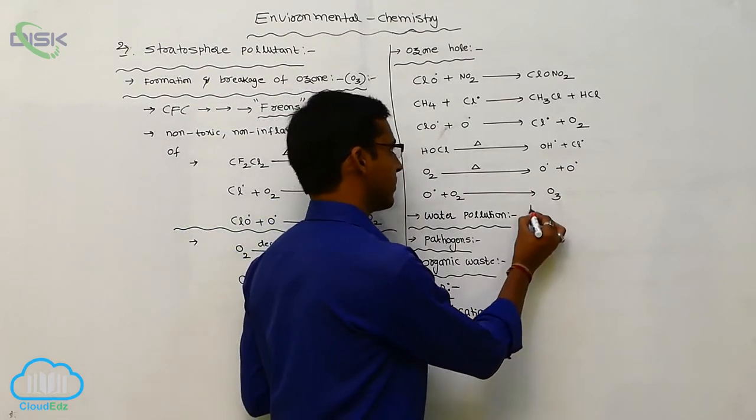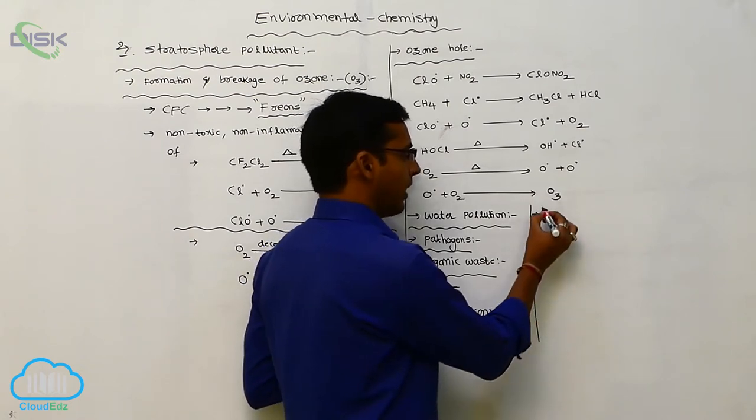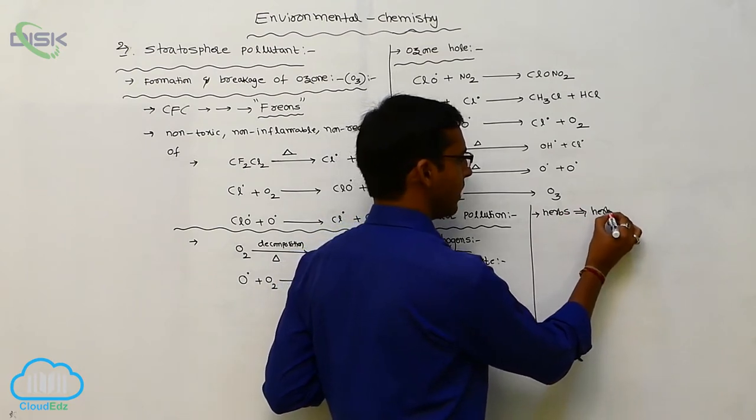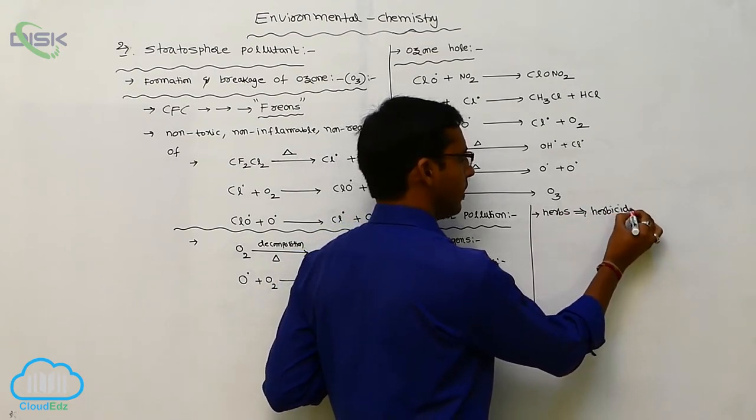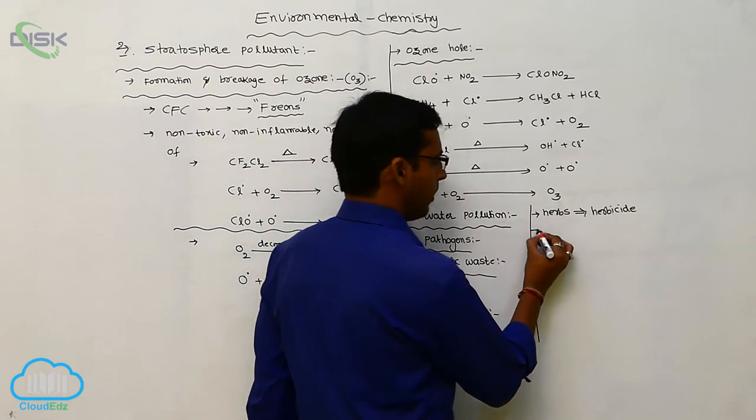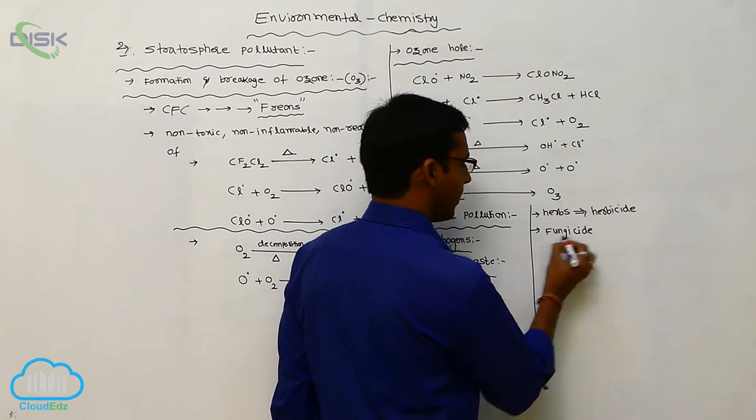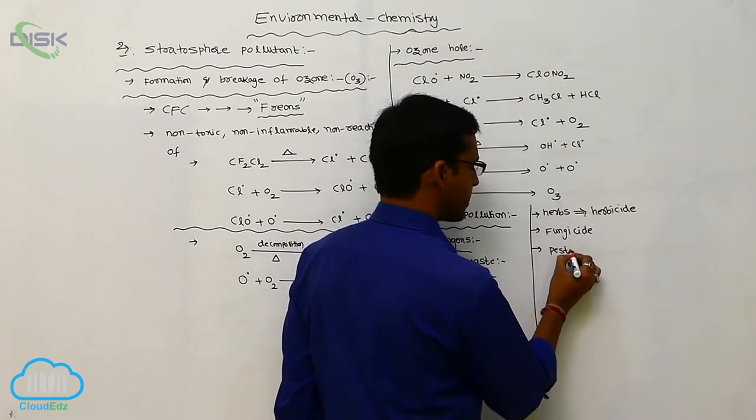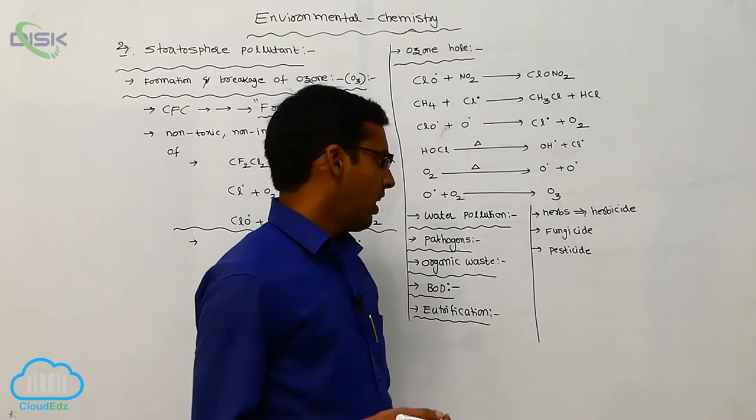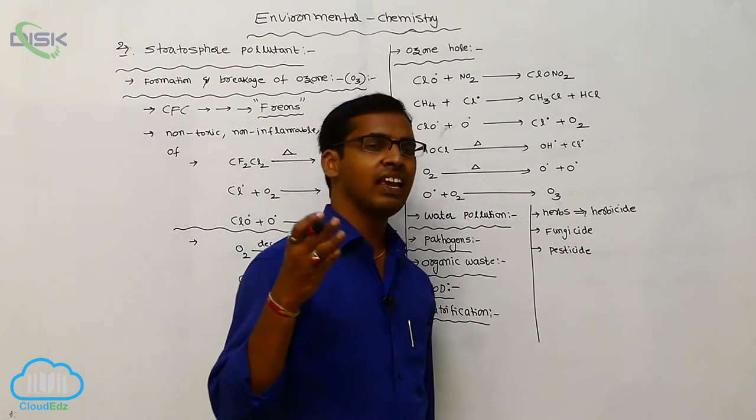And next one is killing of herbs. The killing of herbs is called as herbicide. And the killing of fungi species is called as fungicide. The killing of pest is called as pesticide. So different types of fertilizers, herbicide, fungicide, pesticides are used for killing of microorganisms.